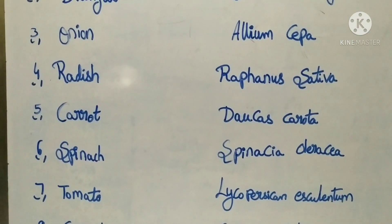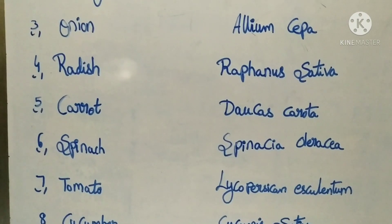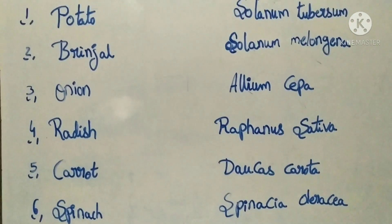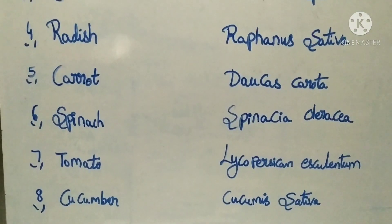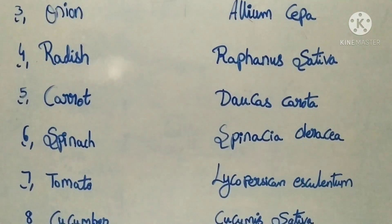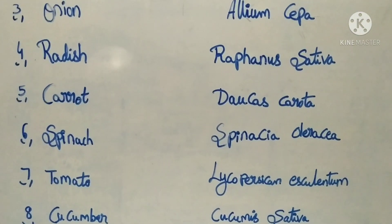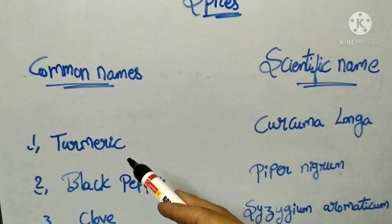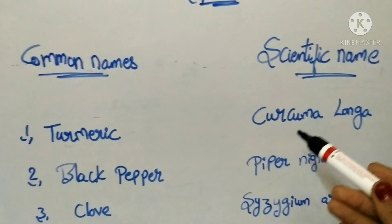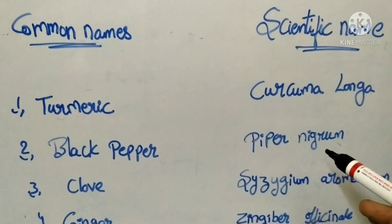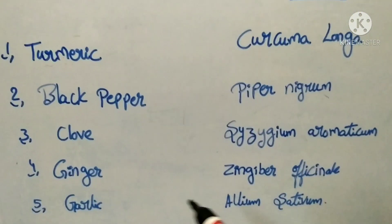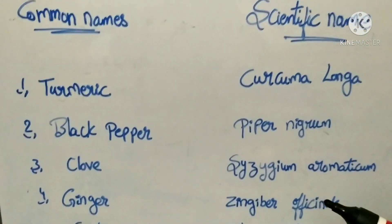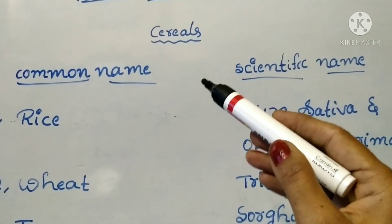You are watching this video to improve your scores in exams. This is very important. Next, we will talk about spices. The scientific names of spices: Turmeric — Curcuma longa. Black pepper — Piper nigra. Clove — Syzygium aromaticum. Ginger — Zingiber officinale. Garlic — scientific name.